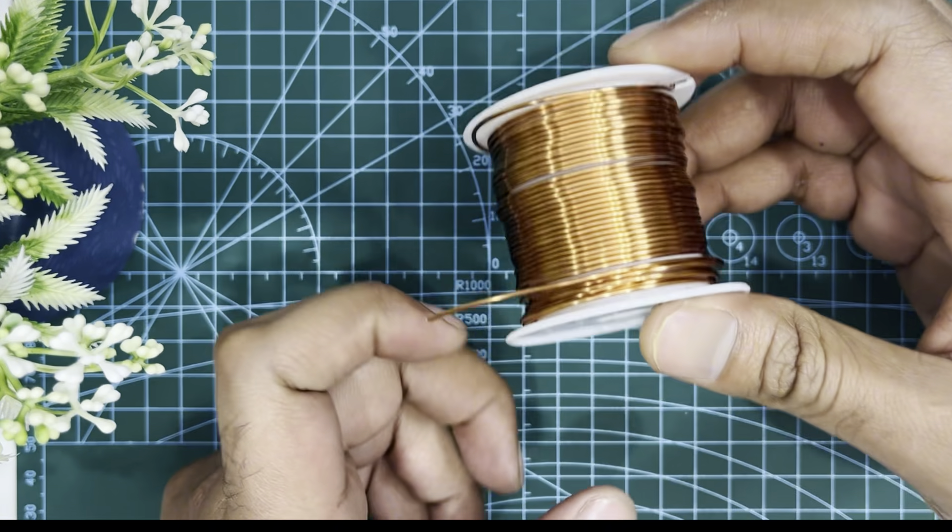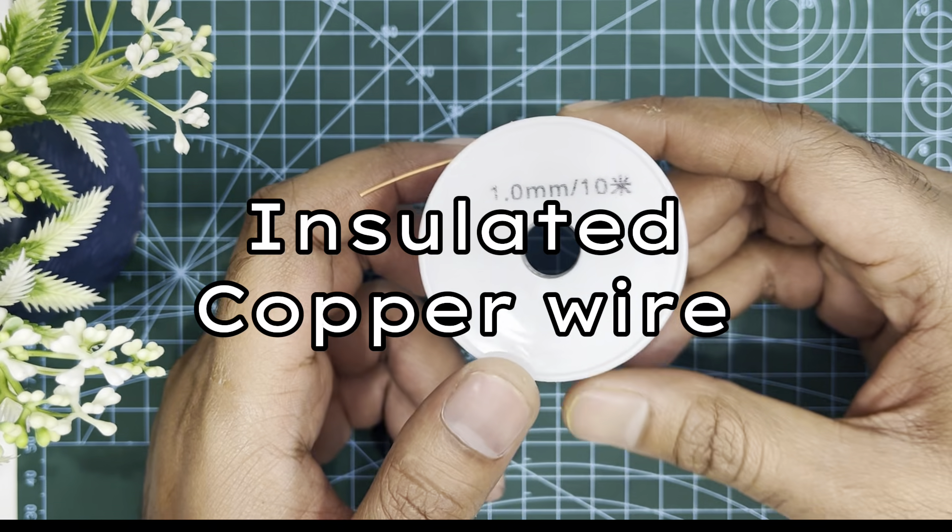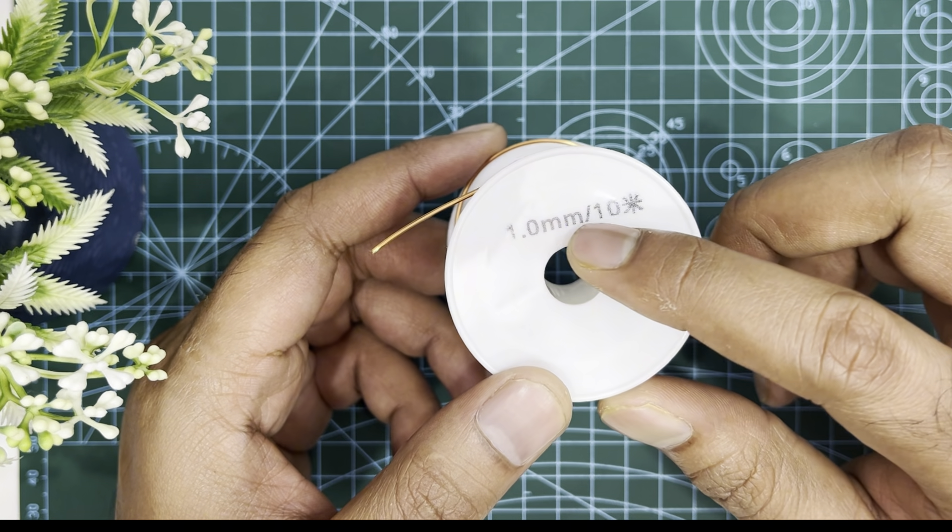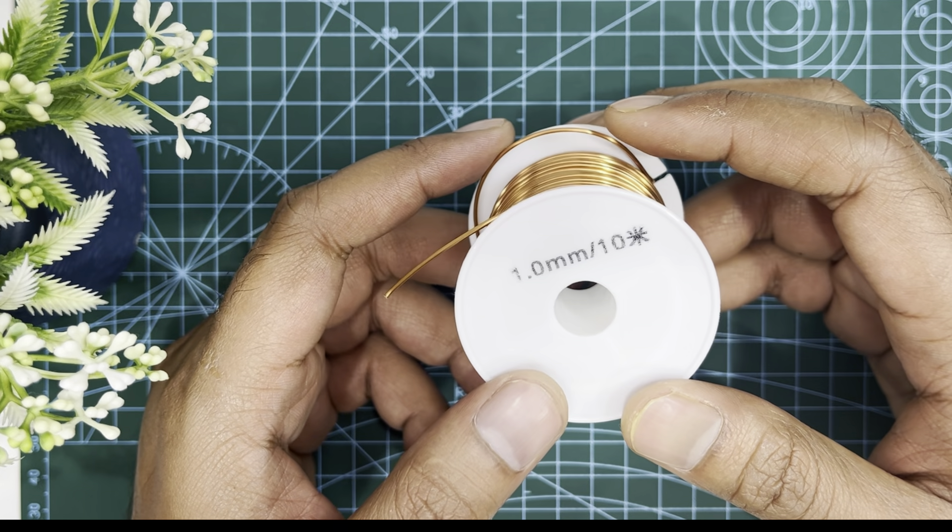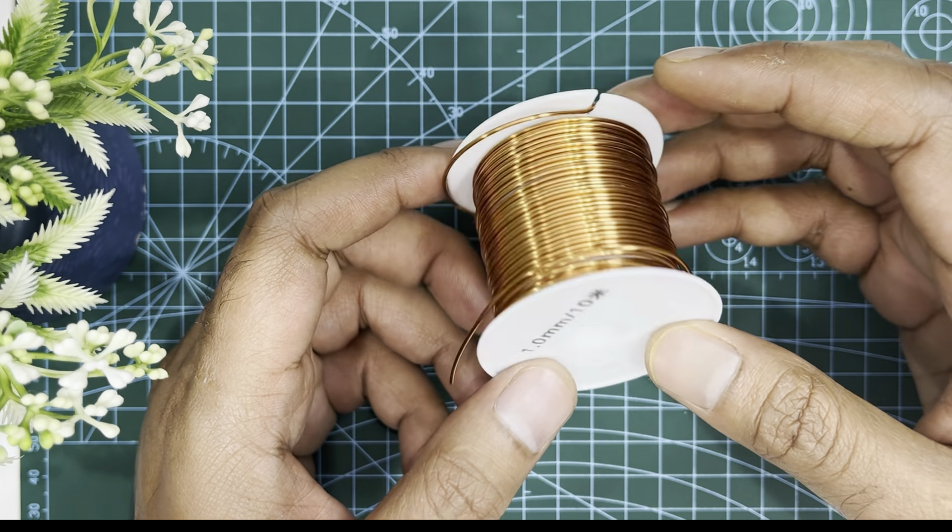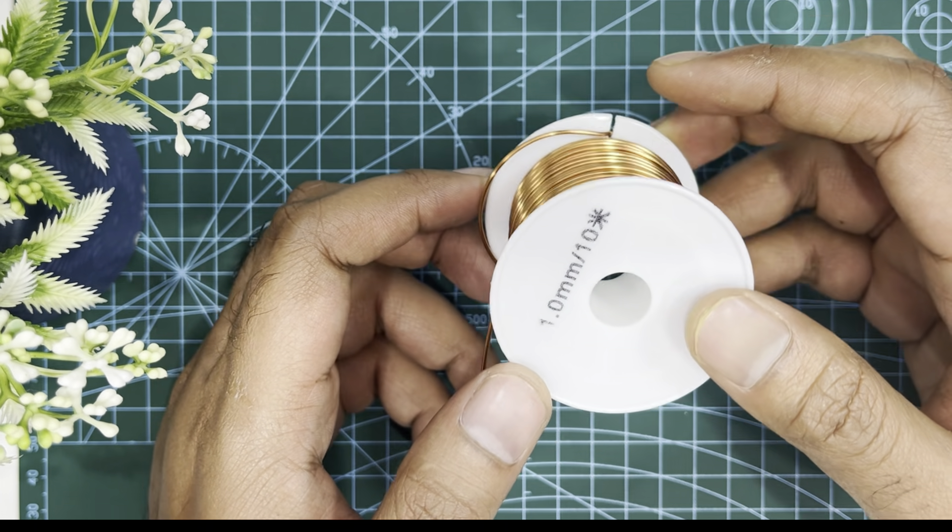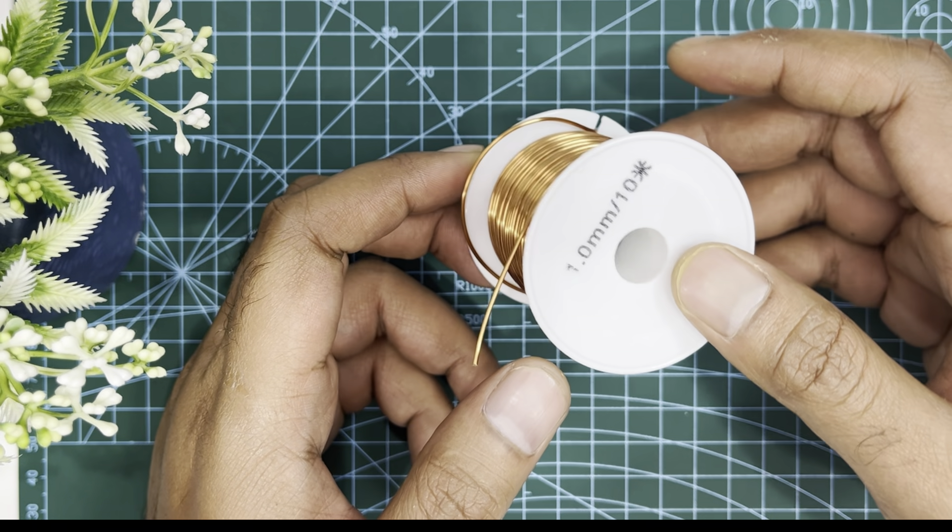The first thing you need is insulated copper wire. This is 1 mm or 18 AWG thickness copper wire. You can buy it from outside. 2.5 meters of copper wire will be enough.